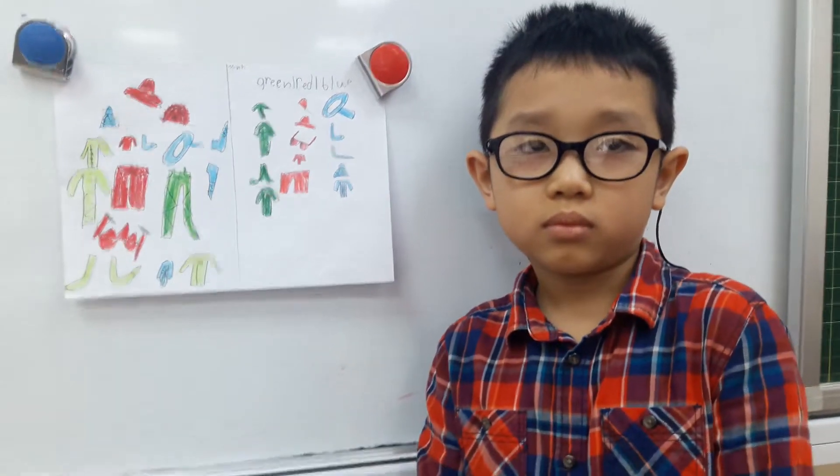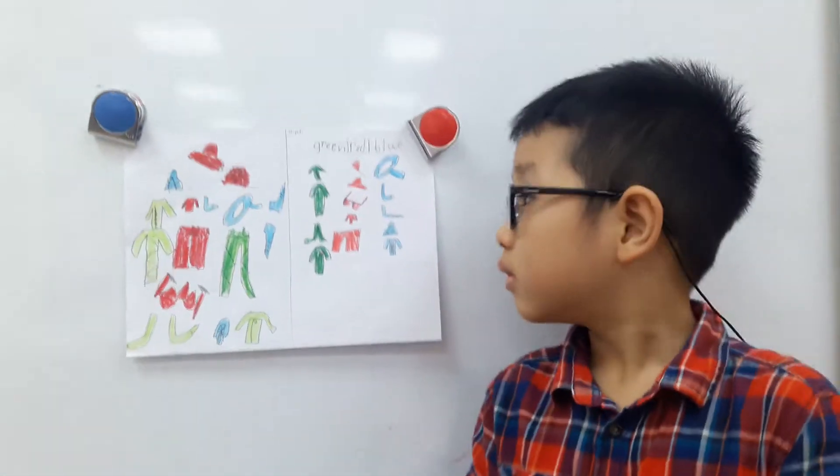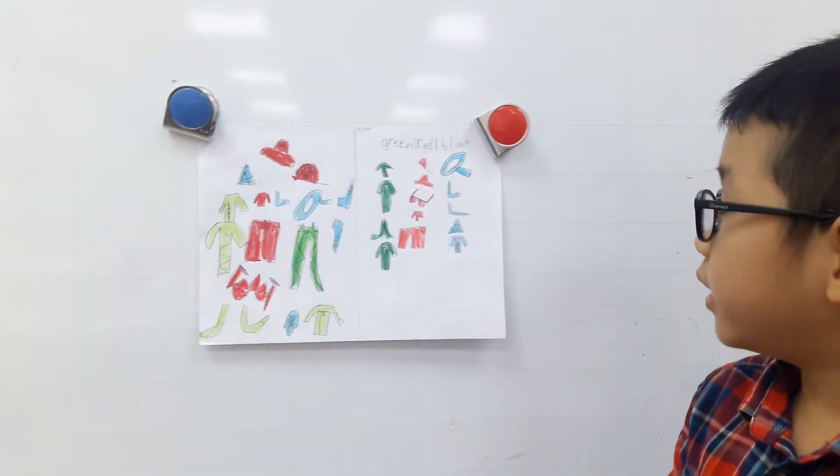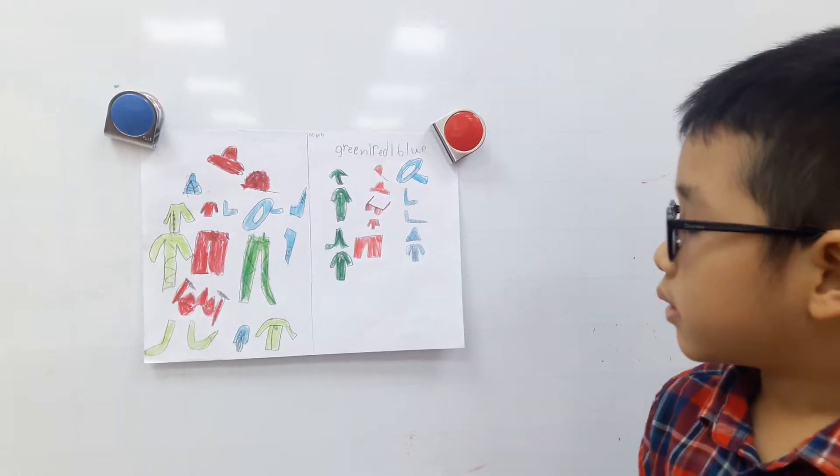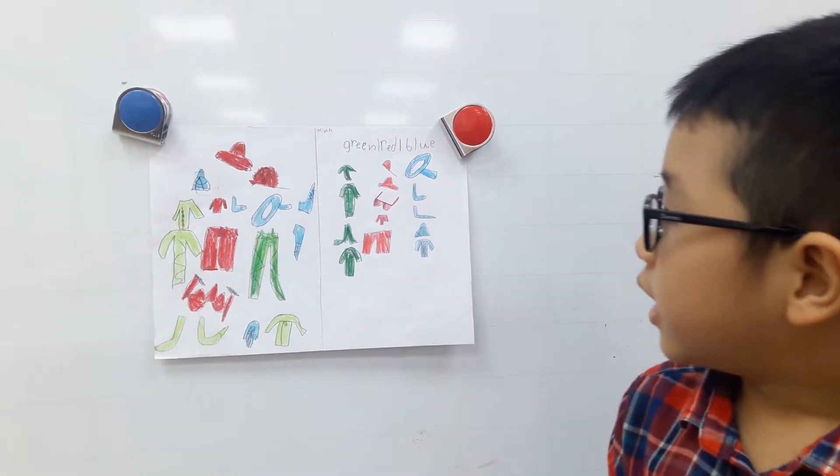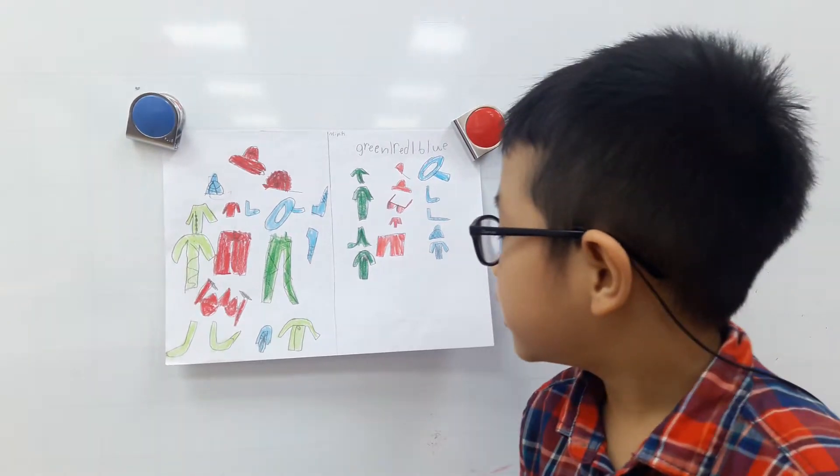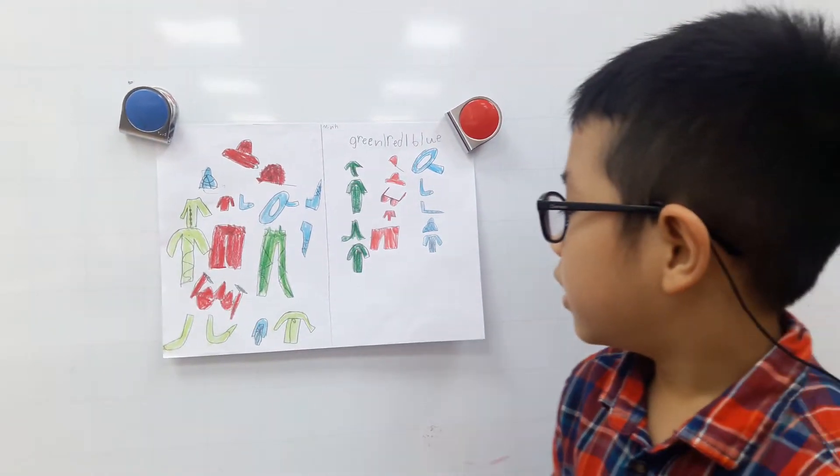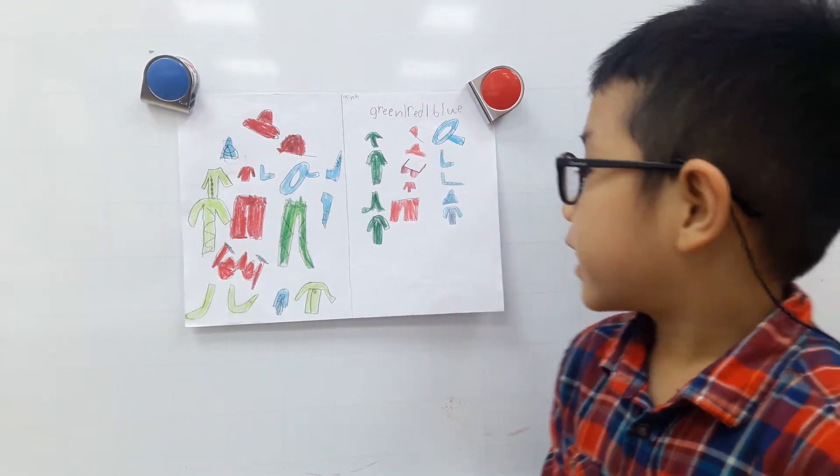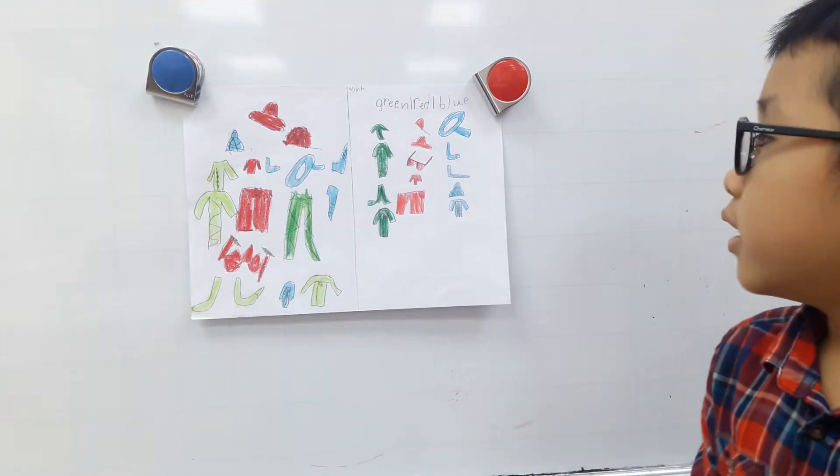So what items of clothes were green? It's a dress, shoes, and a jacket. Okay.